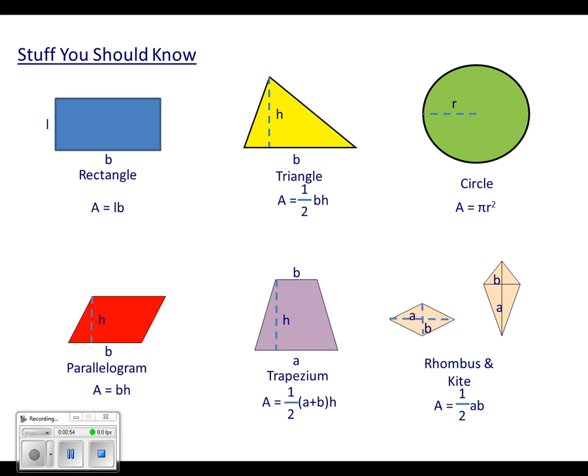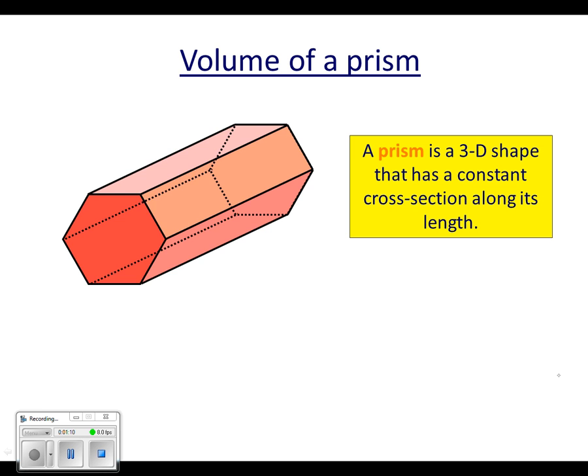Now what we're going to look at today is volume of a prism. You'll have heard the word prism before, probably when you're talking about triangular prisms which is the shape of the box for your Toblerones. The thing that makes something a prism is that cross section of that front face. As it moves through the shape, it doesn't change, it's constant. That is the thing that makes something a prism.